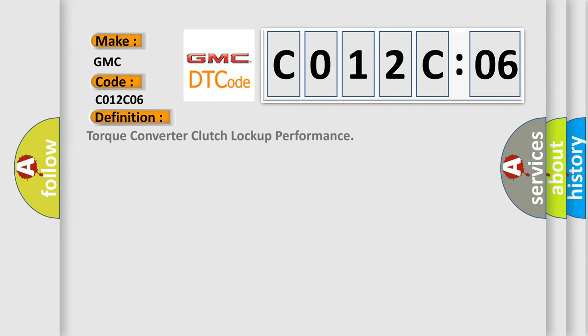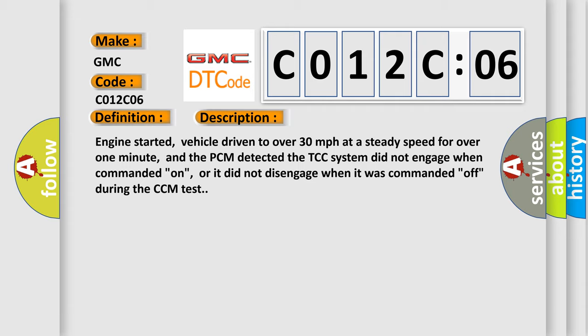The basic definition is torque converter clutch lockup performance. And now this is a short description of this DTC code.